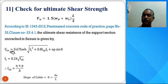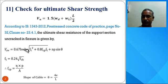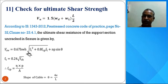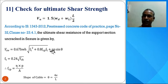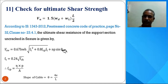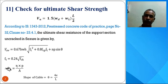VCW (shear capacity) = 0.67 × BW × H × √(FT² + 0.8 × FCP × FT), where FCP = 80% of FCP. If the cable profile is inclined or parabolic, we add VP × sinθ. If the cable is eccentric we include this term; otherwise we use only the main formula.